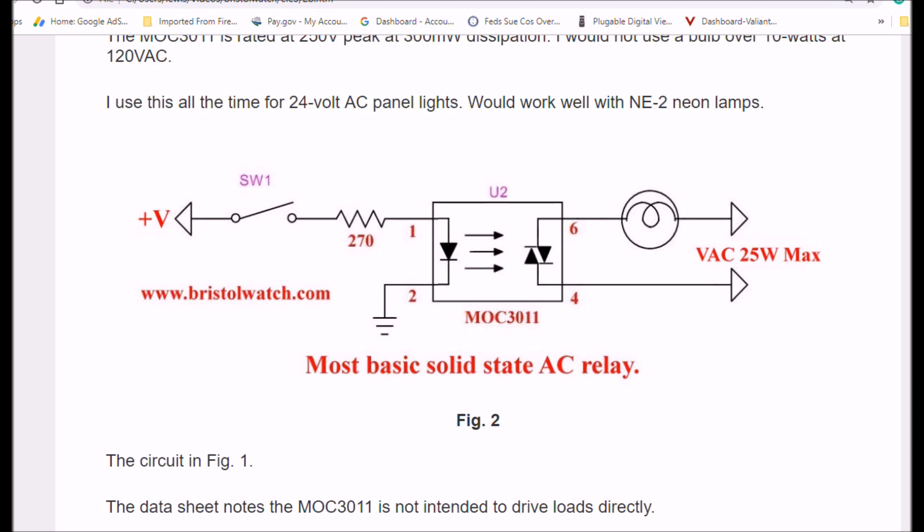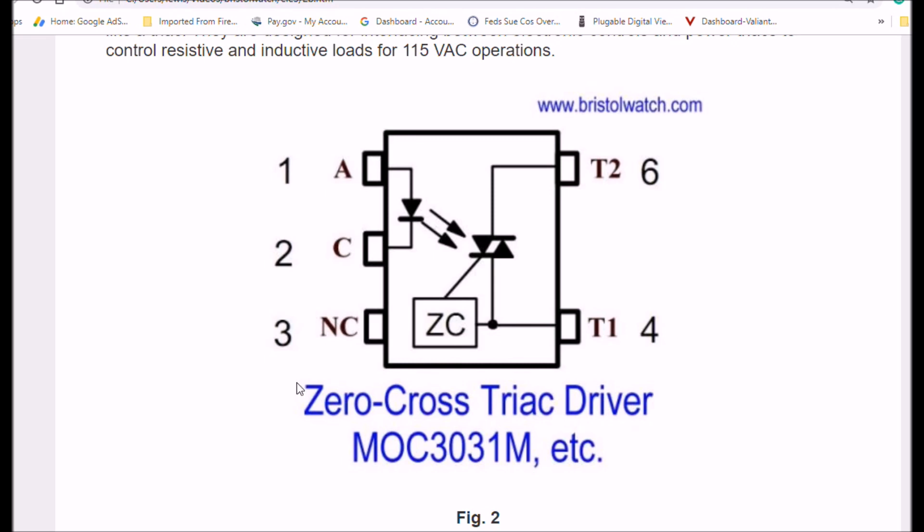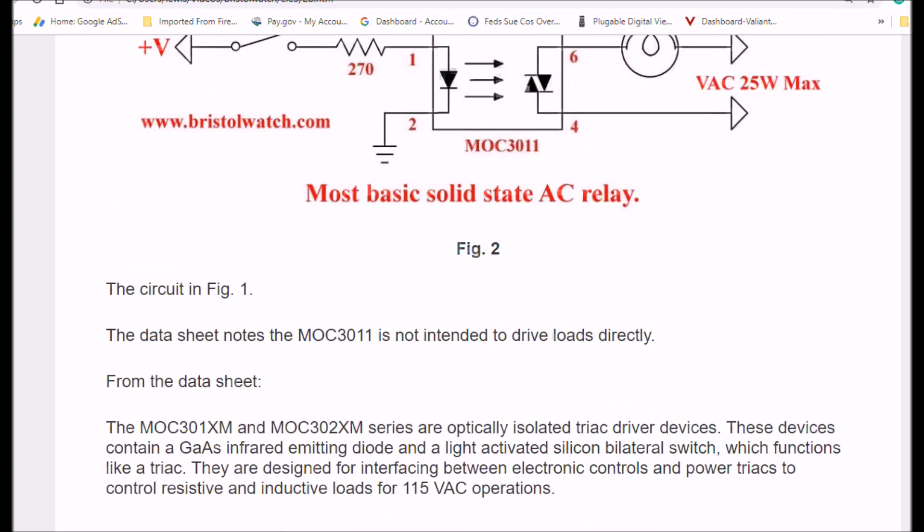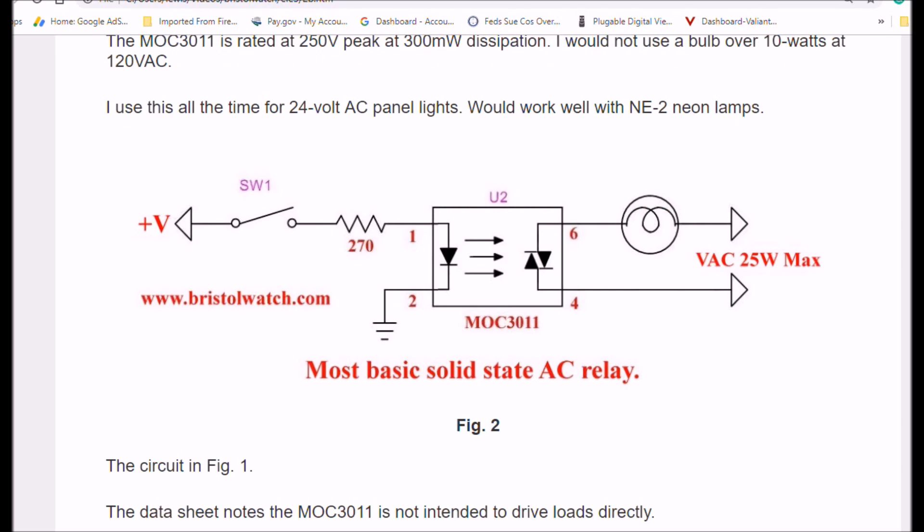One final thing to note. This is rated for 300 milliwatts, as I remember. This down here is another type of similar TRIAC with a photo TRIAC detector. It's only rated at 150 milliwatts, so it can't carry the power that these types can.